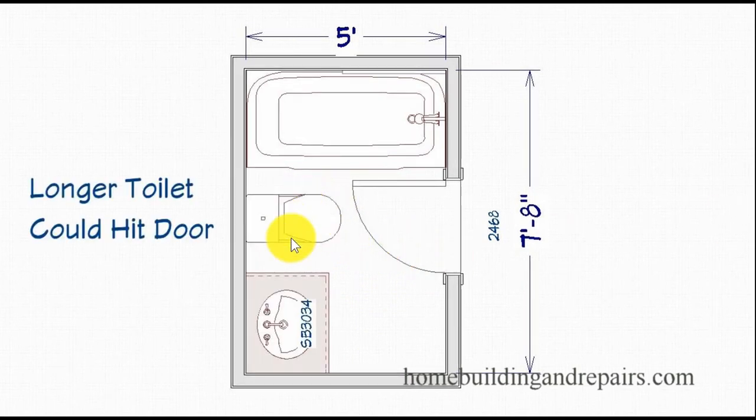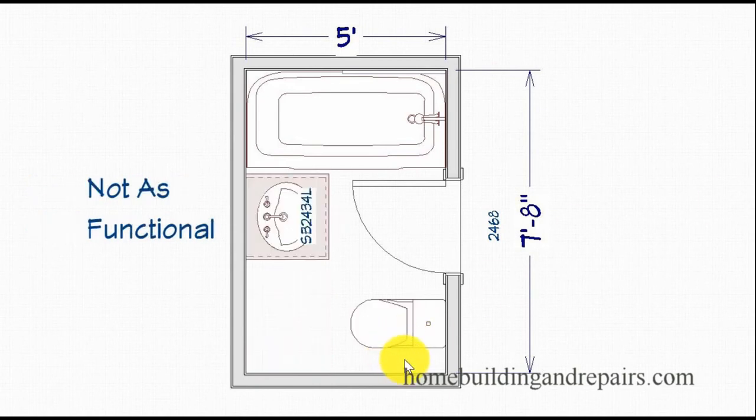Longer toilet could hit the door if the toilet is over here instead of over here. This right here, probably not going to be as functional. You could see where if the toilet was over here, it's going to be a little easier. You're not going to have to worry about this distance here.